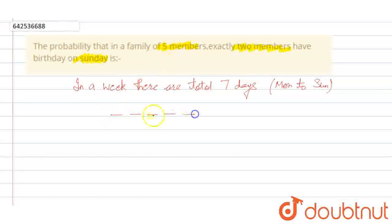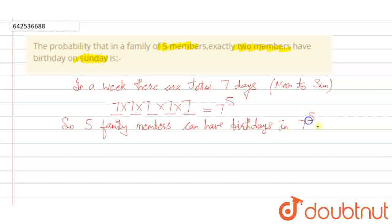Each member would be having 7 options. So this becomes 7 raised to power 5. 5 family members can have birthdays in 7 raised to power 5 ways.